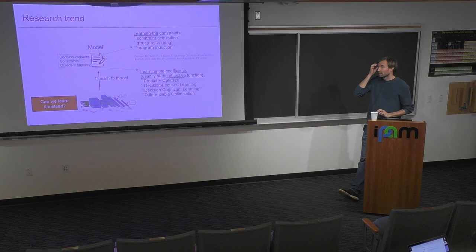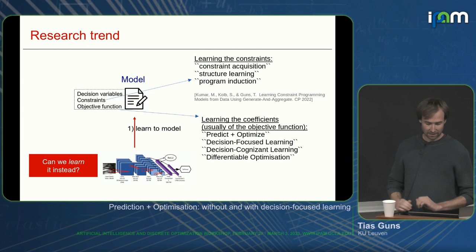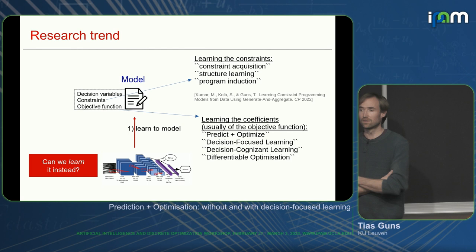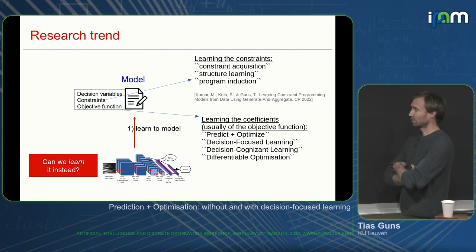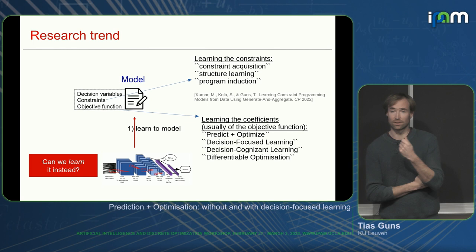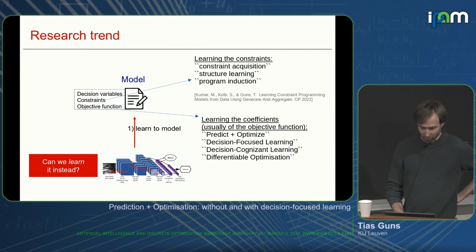I'm not going to talk about learning the constraints, but I want to highlight that this is also a thing. It's very symbolic in nature — a structured learning problem, very close to program induction and symbolic search techniques. Today I'll talk about where we want to learn part of the coefficients, usually coefficients of the objective function, though I'll only cover techniques for learning coefficients in the objective function.